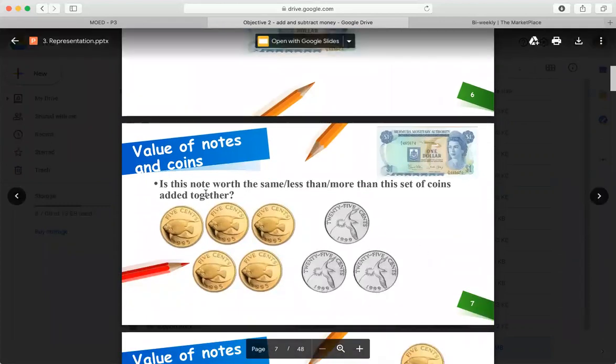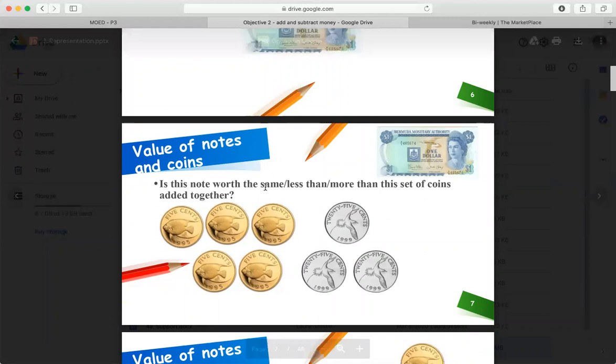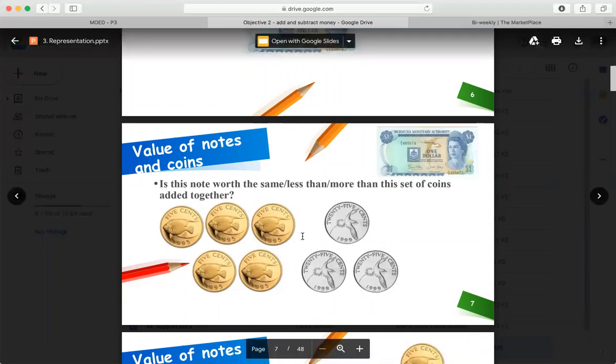All right. Is this note worth the same, less than, or more than this set of coins? So is this bigger, smaller, or the same as this? Well, these are $0.05 pieces, so let's count by fives.